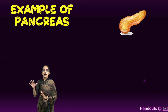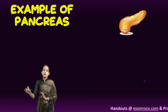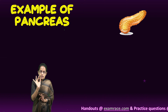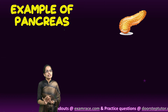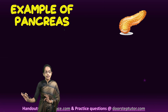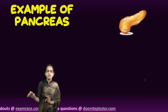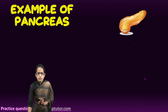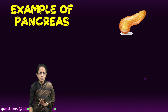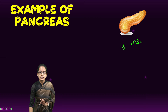Now let's come to our body organs. We will talk about two simple endocrine glands — one is pancreas and the other is thyroid — and how this feedback mechanism works for both. What happens with pancreas: pancreas releases insulin.